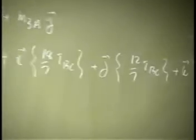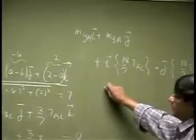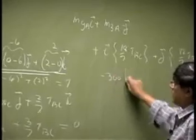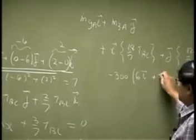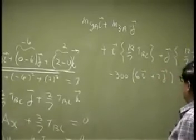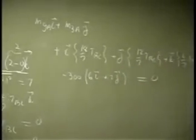Now this one is easy to work with. You go with this. So we have negative 300, and you are going to have 6I plus 2J. And that all adds up to 0.